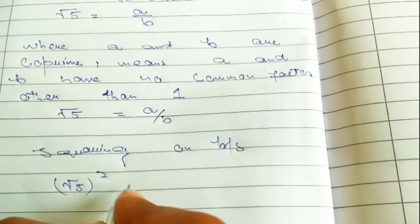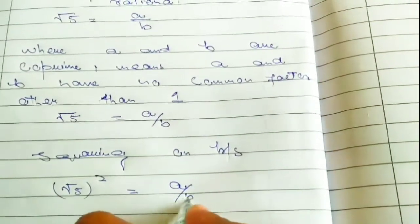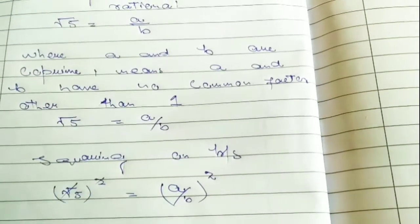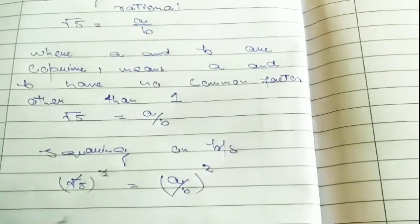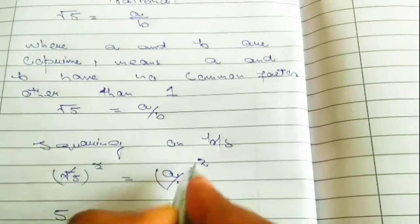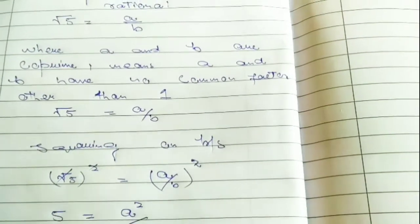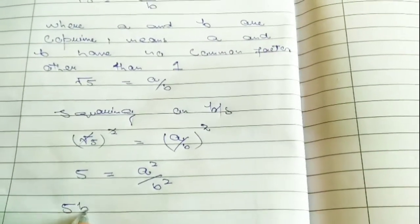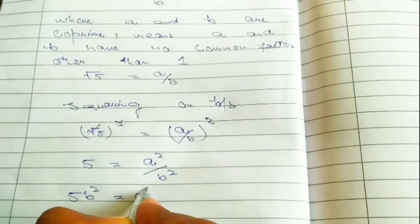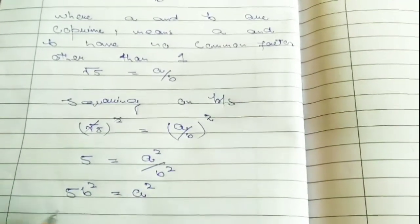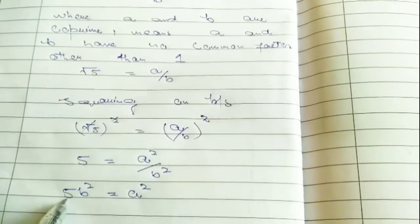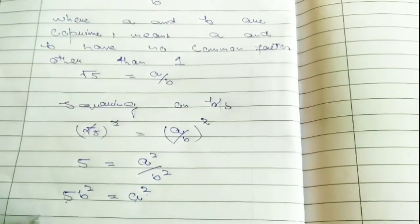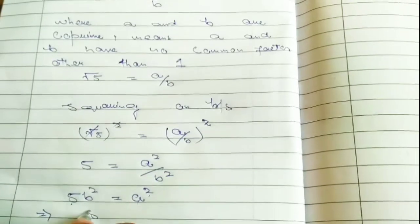Here we know square and square root will be cancelled. 5 will be equal to A square upon B square. 5B square equal to A square. It implies that 5 divides A square.